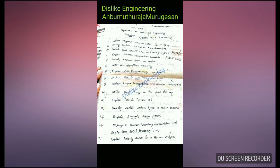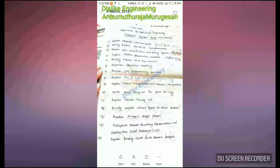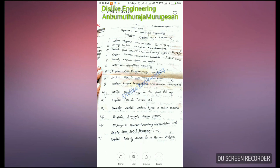The thirteenth question is: explain the Cyclic Design Process — already covered in the design of machine questions. The fourteenth question is: distinguish between Boundary Representation (B-Rep) and Constructive Solid Geometry (CSG). The fifteenth question is: explain Finite Element Analysis.